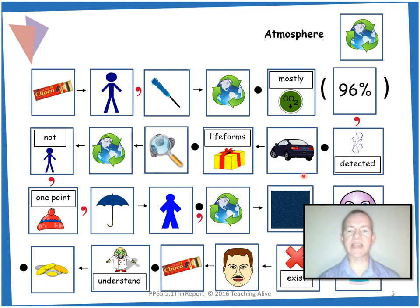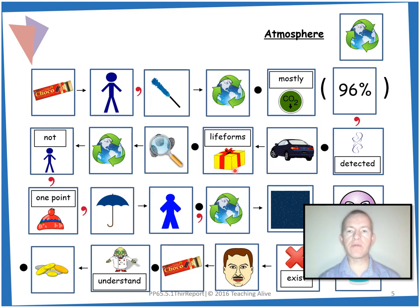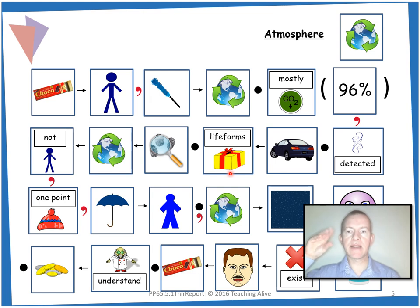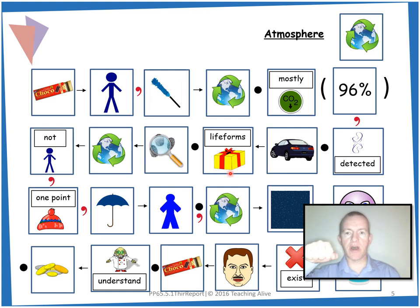We start a new sentence: this indicates — gesture for indicates — that life forms could be present. Give a present gesture. That life forms could be present on the planet. Full stop. Let's do that again: this indicates that life forms could be present on the planet. Full stop.